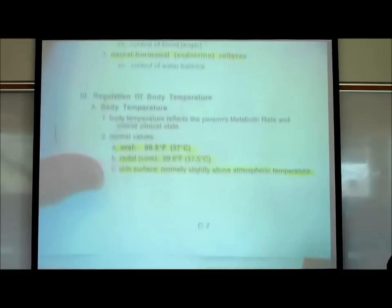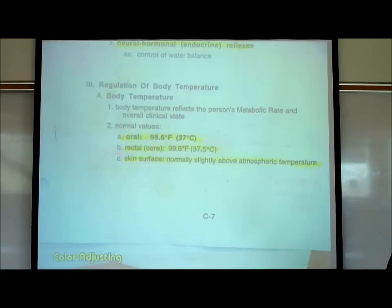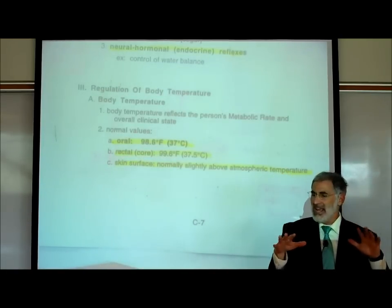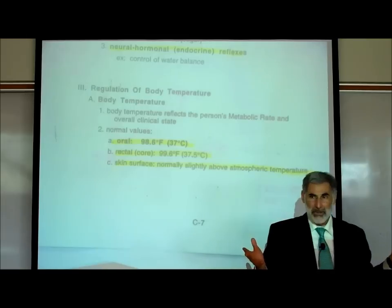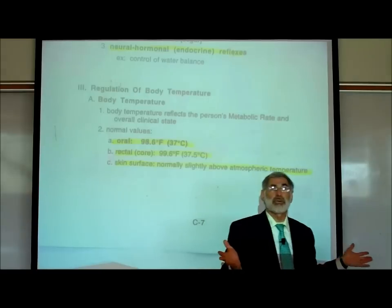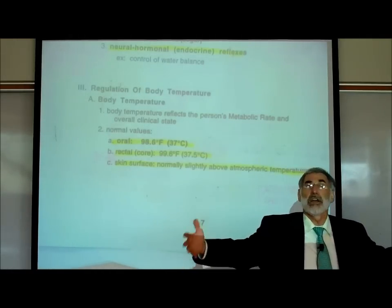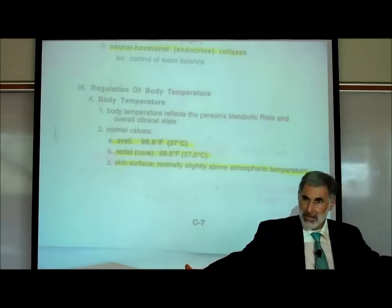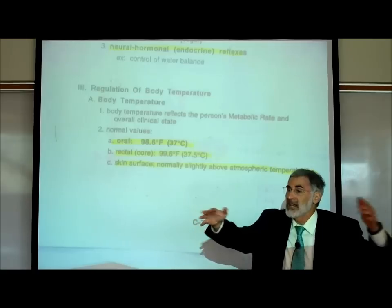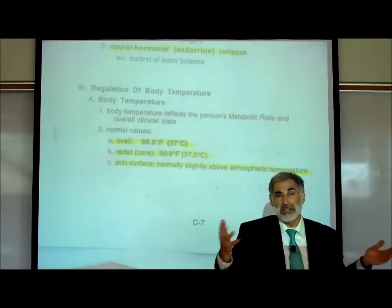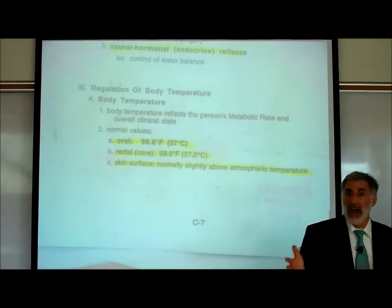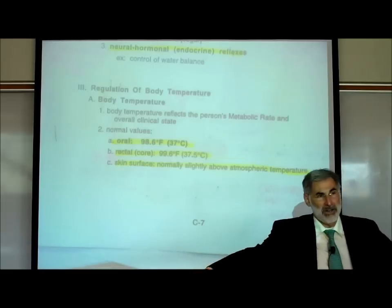What's the temperature on the surface of our body, right here on the skin? The answer is it varies. The temperature on the surface of our skin is about five degrees warmer than whatever the air temperature is around us. If the air temperature is 70–75 degrees, then the temperature on the surface of our skin is about 75–85 degrees — only about five degrees warmer than the air.